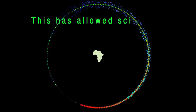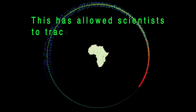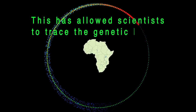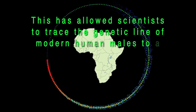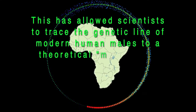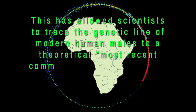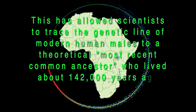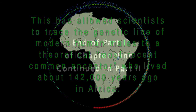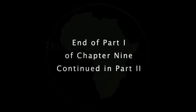This has allowed scientists to trace the genetic line of modern human males to a theoretical most recent common ancestor who lived about 142,000 years ago in Africa. This ancient ancestor is...